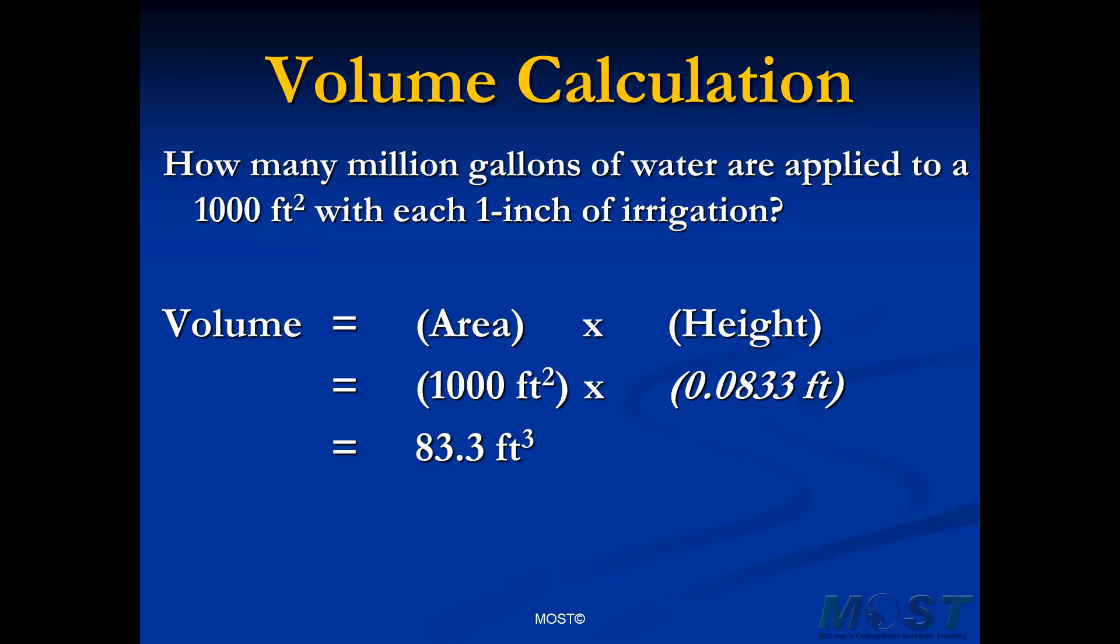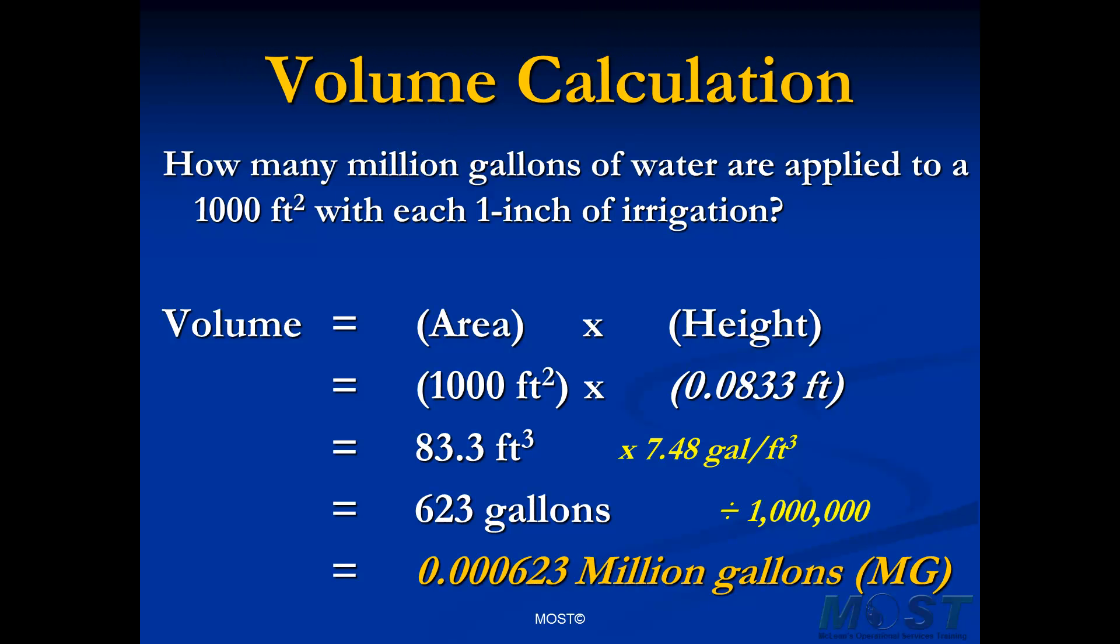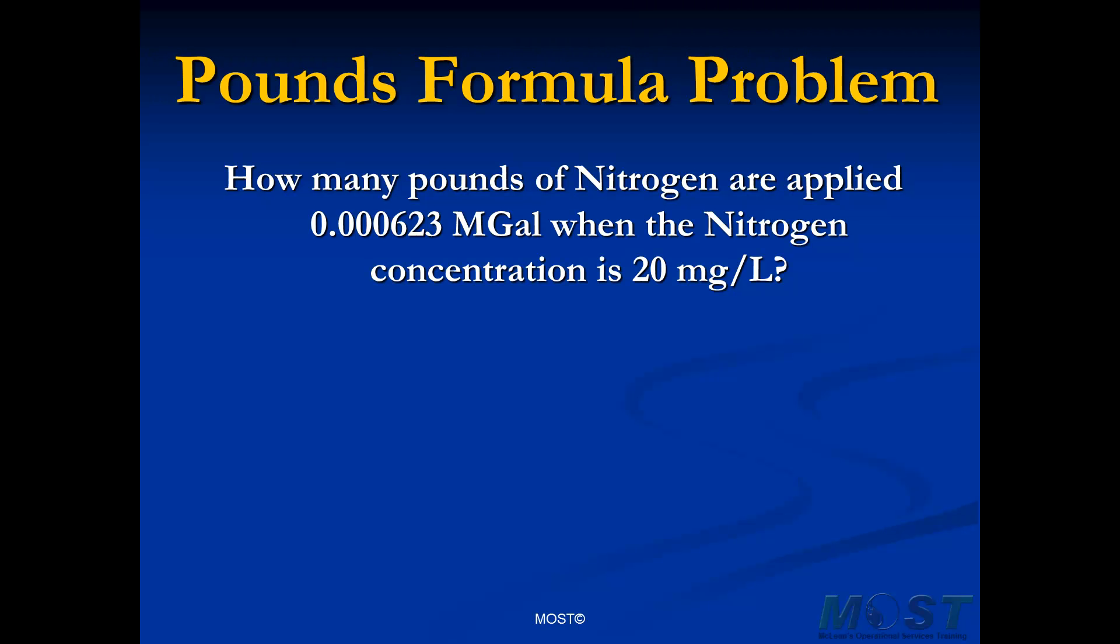That's nice. We have a volume, but it's not in the right units. For the pounds formula, we have to be in gallons, not cubic feet. So we'll multiply this by 7.48 to convert into gallons, that's 623 gallons. The pounds formula requires it to be in million gallons, so we're going to divide this by a million. It gives us a really small number because we're not dealing with a treatment plant, we're dealing with a lawn. But now we have our volume in the right units. We can go back to the pounds formula. We have that missing variable now.